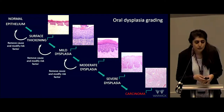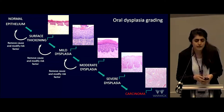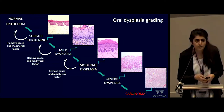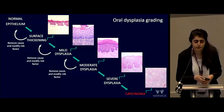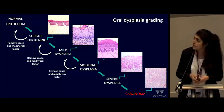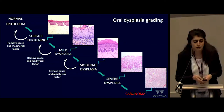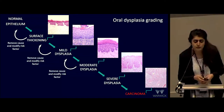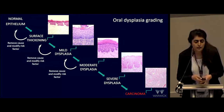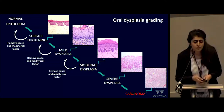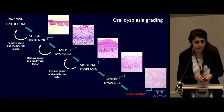If the irritant or causative agent is removed, to some extent the dysplasia grade can be reversed in the early stages of grading. You can see, based on the histology, the varying appearances in relation to the different grades, which are based on the different architectural features and the extent to which these progress through the oral epithelium.